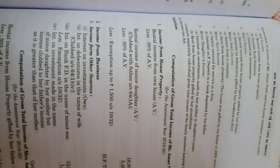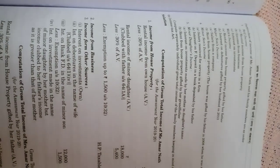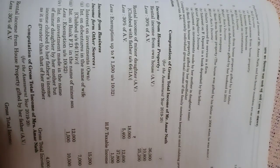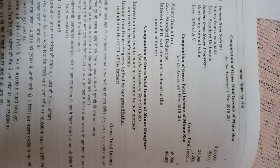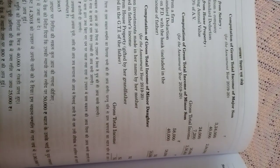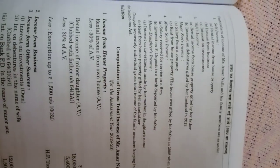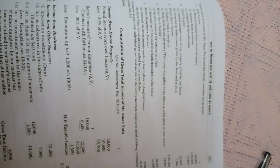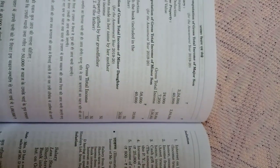Now let us see major son's income. Salary from a company is ₹3,24,000. Major son's income is not clubbed — there is no such provision for a major son. So salary of ₹3,24,000 less standard deduction of ₹40,000 gives net salary of ₹2,84,000. The second part is rent from house property — the house was gifted by his father in 2008 when he was a minor — ₹24,000, annual value ₹24,000 less 30% = ₹7,200, net income from house property ₹16,800.